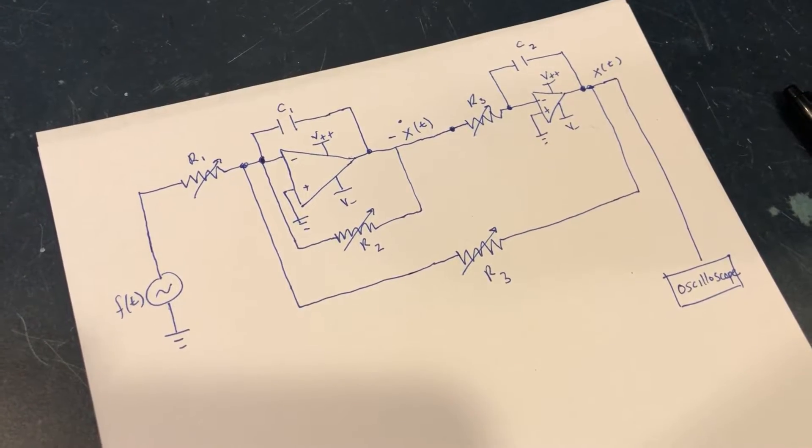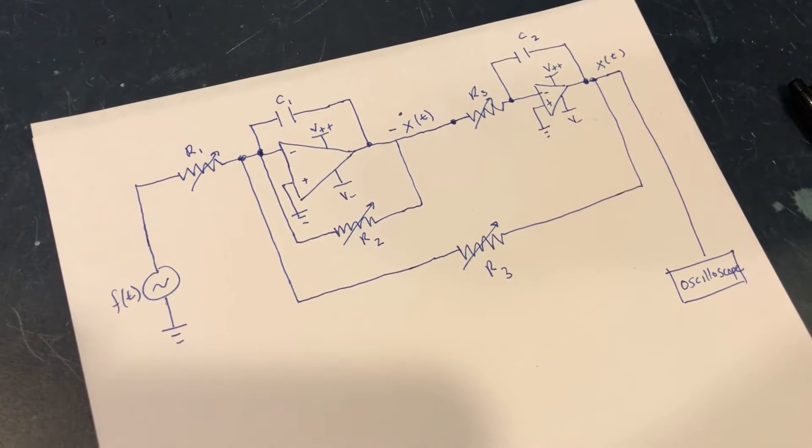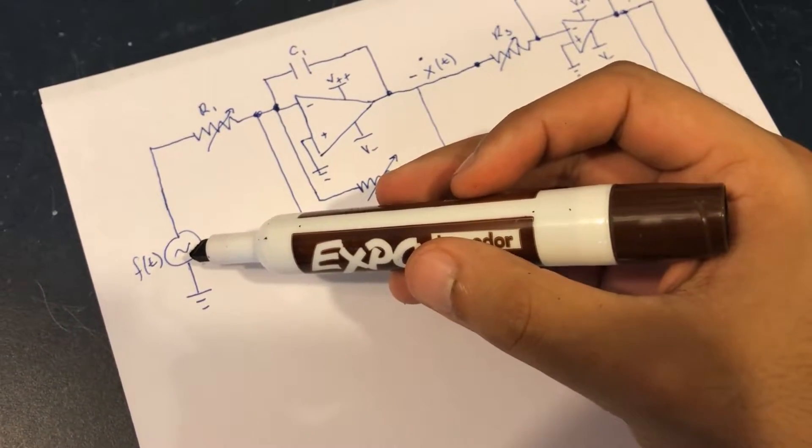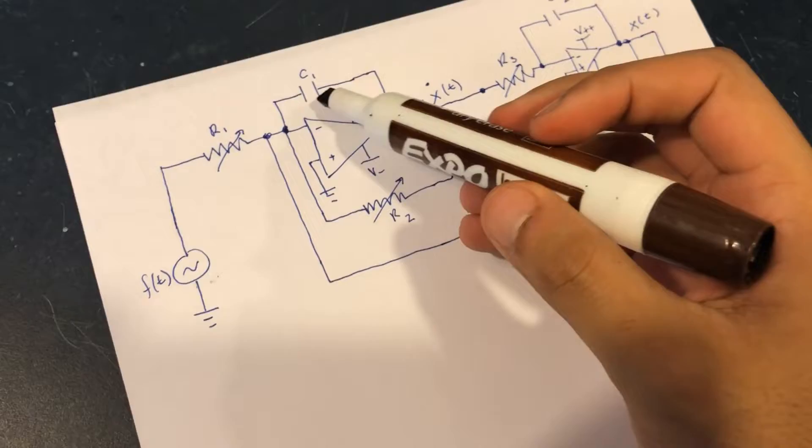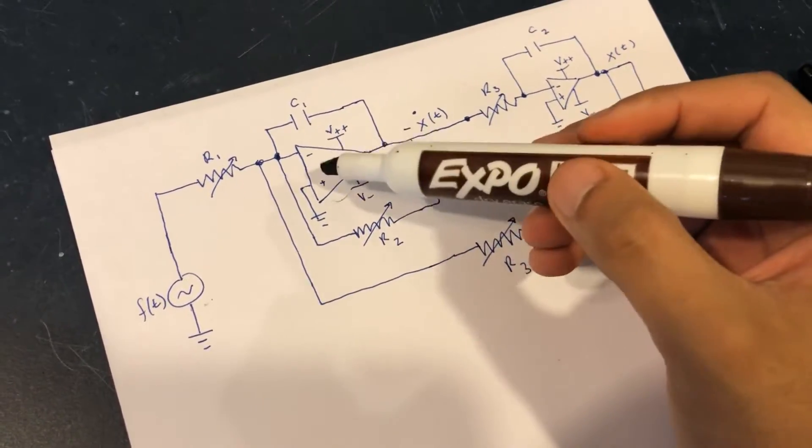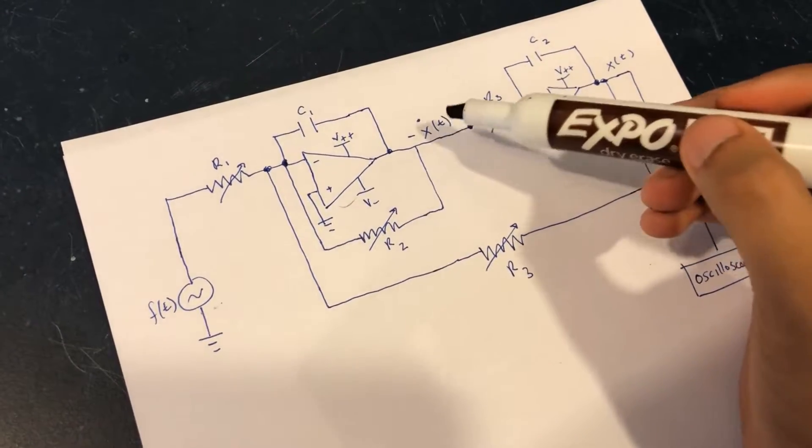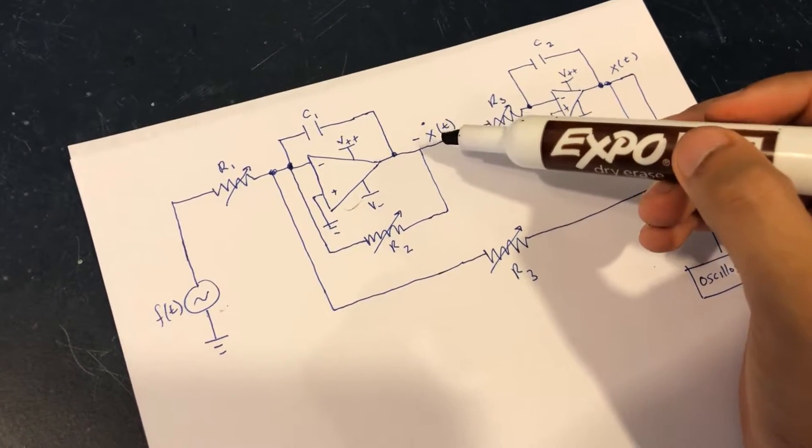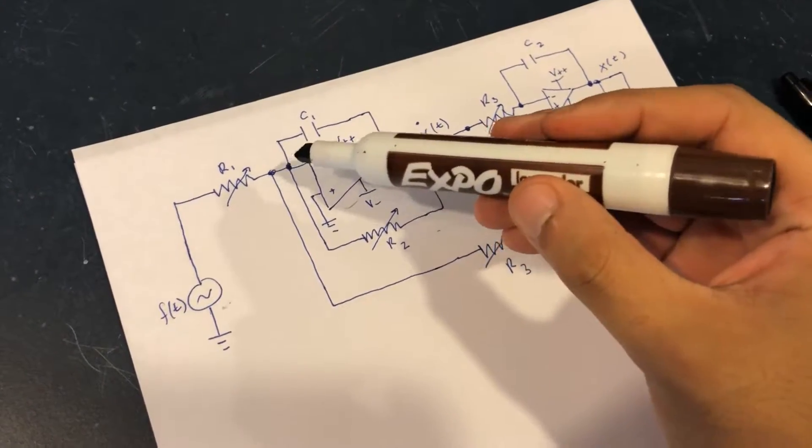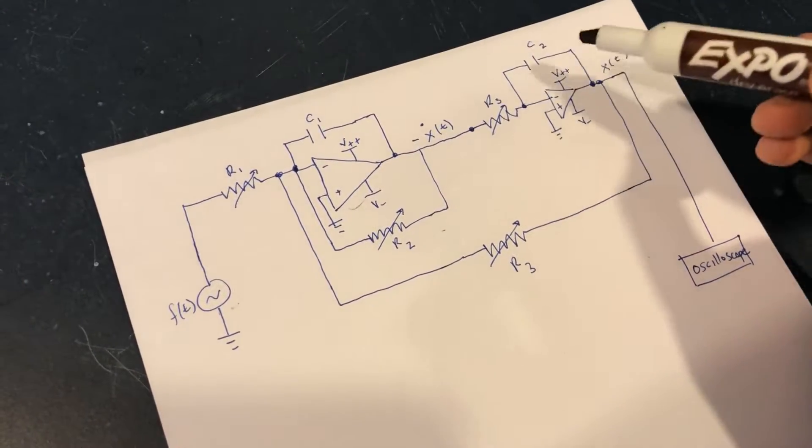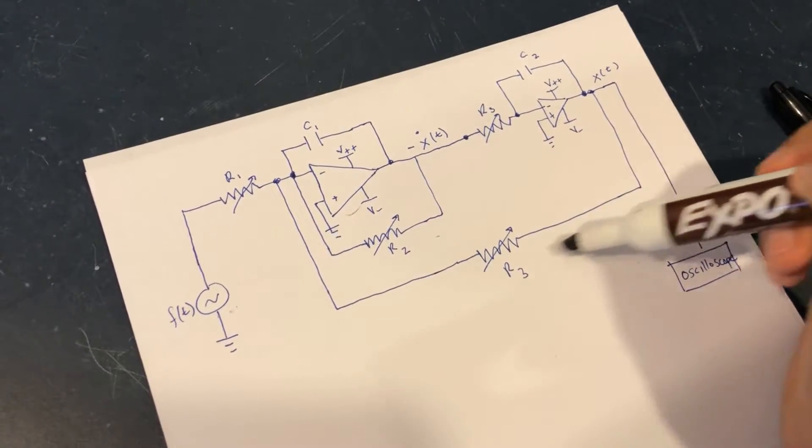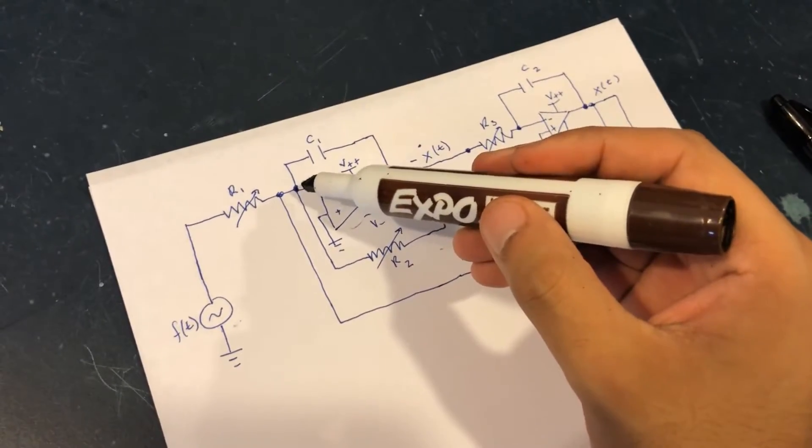So basically what we have here is basically what we had in the block diagram. So right here we have our function input, which is that non-homogeneous part of the differential equation, and we're sending that into this integrating op amp, the first integrating op amp. This is going to provide some sort of integration, and output is going to be the negative first derivative of the original equation. And we're just going to feed that back into this summation over here. And then we're going to feed the process again, do that another integration, and we're going to get that equation x of t, and then we're going to send that back into the original summation over here.